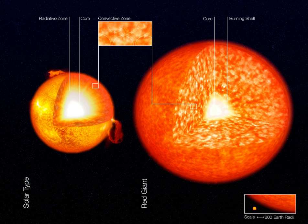Examples of subgiants include Gamma Geminorum, an A-type subgiant, and Eta Boötis, a G-type subgiant. Another luminosity class is the bright giants, class II, differentiated from normal giants, class III, simply by being a little larger and more luminous.